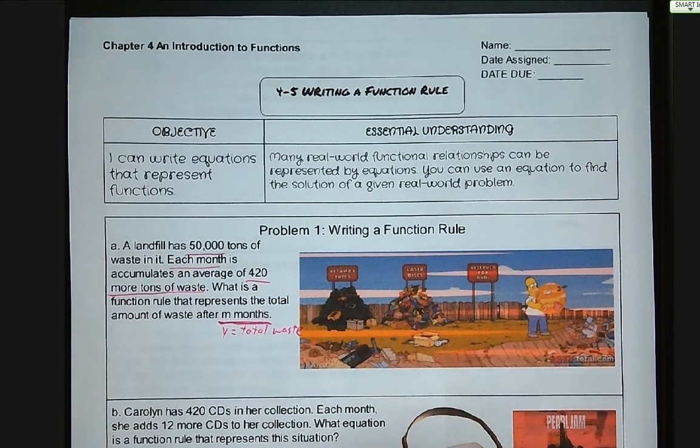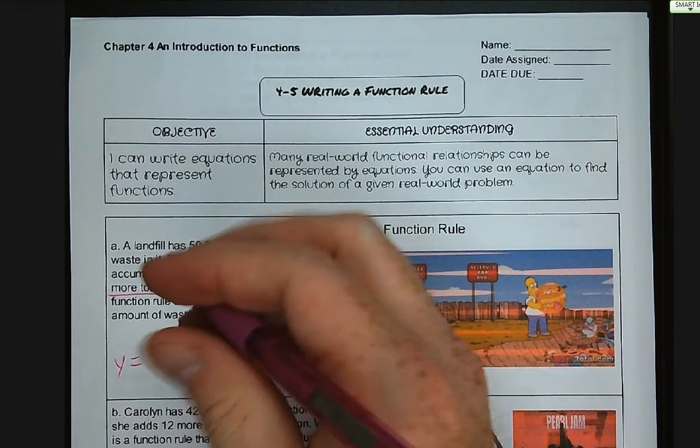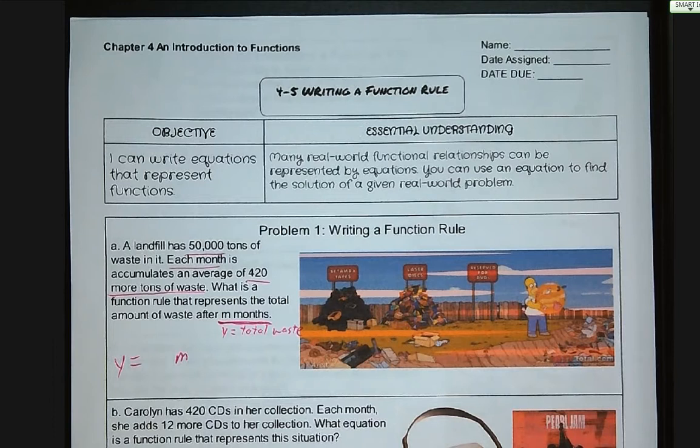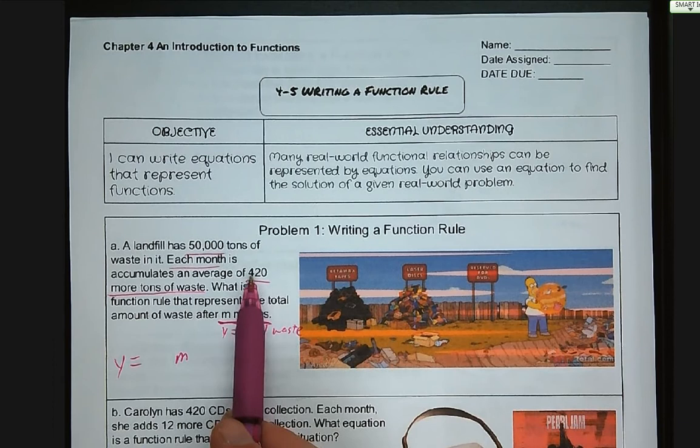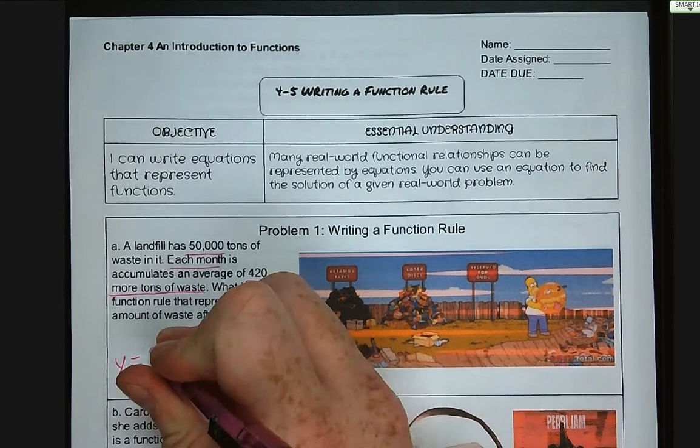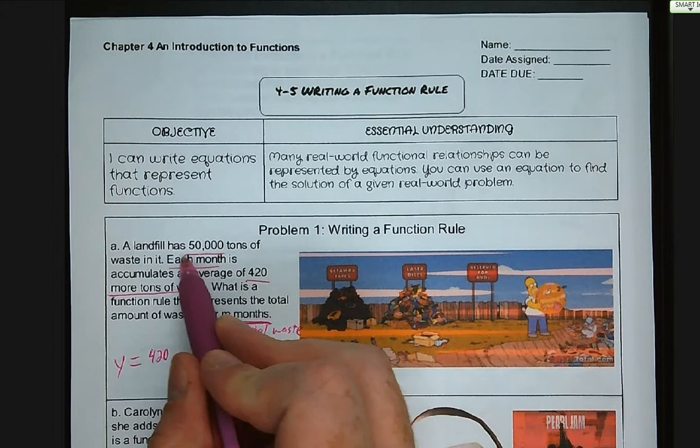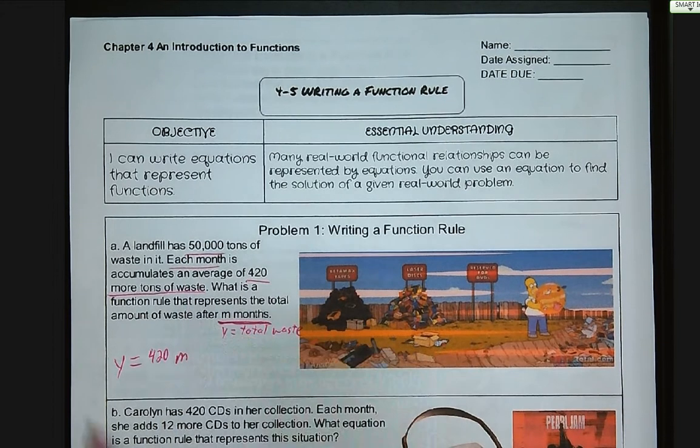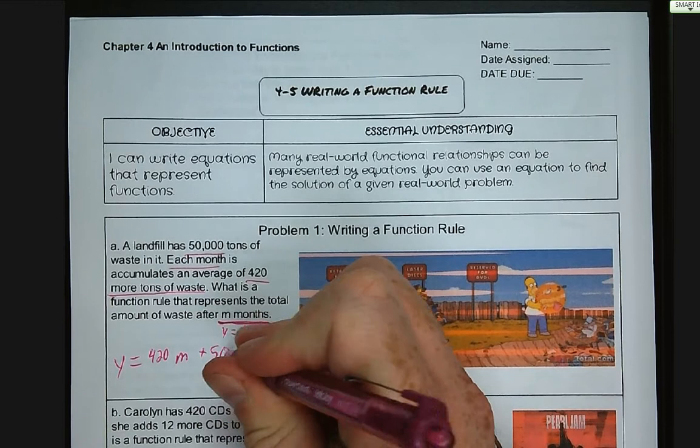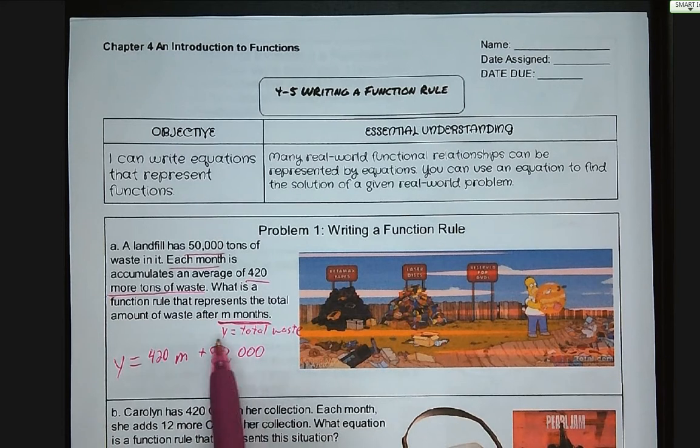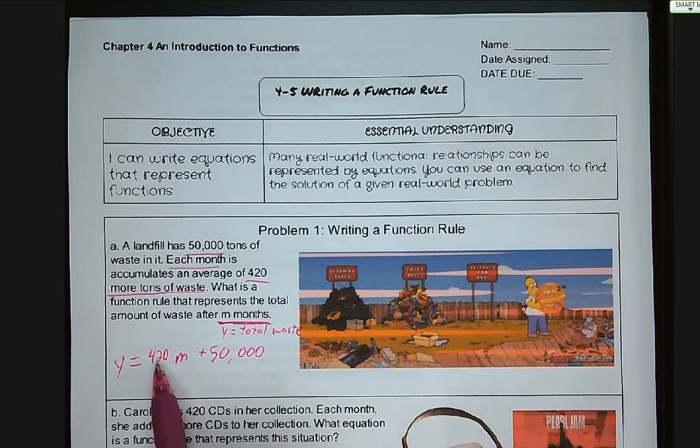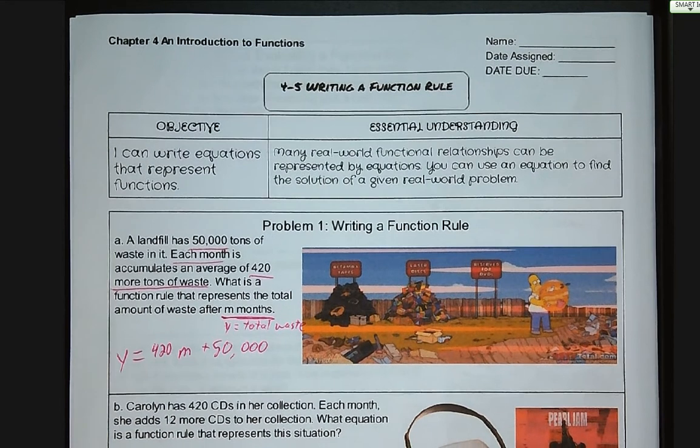So we know that m is months. I'm going to define that y is equal to total waste. So now we write our equation. Y is equal to, we're going to multiply something times m, right? Because we have the total number of months. We're told we have 420 tons of waste added per month, so it's going to be 420 times m. We already have 50,000 tons of waste in this landfill, so we have to add that 50,000 to our total. So our total amount of waste is what we started with, 50,000 tons, plus 420 tons per month times the number of months that have passed.